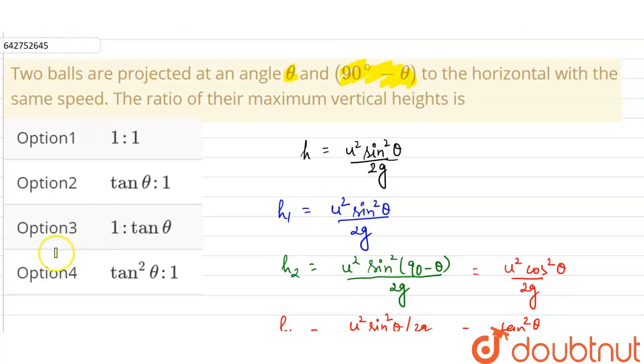So our option number 4, that is tan square theta is to 1, is the correct option. Thank you.